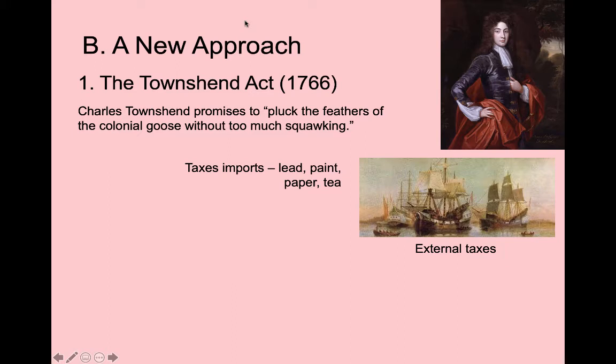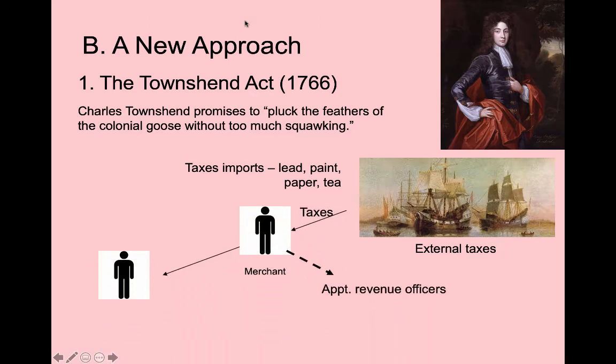The Townshend Acts place taxes on many consumer goods—lead, paper, paint, and most notably tea. These taxes are paid by merchants at the port, so colonists inside the colonies won't physically see a tax stamp. All they'll notice is that prices of consumer goods have gone up a little. This is an external tax assessed at the port.